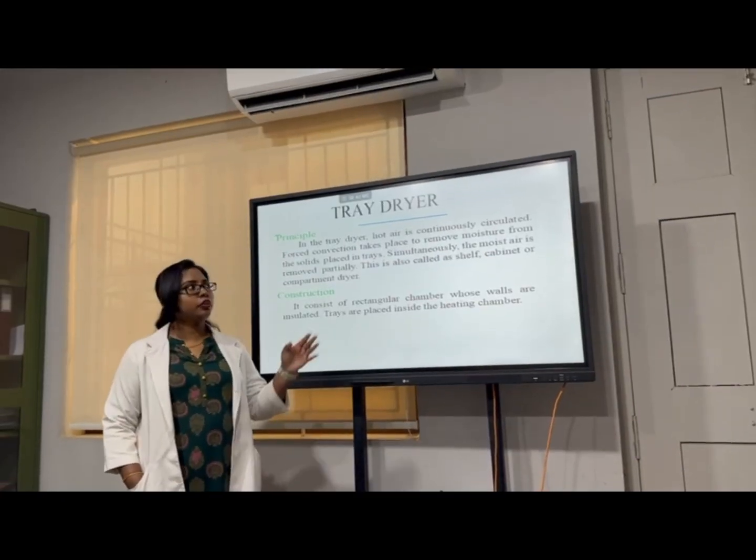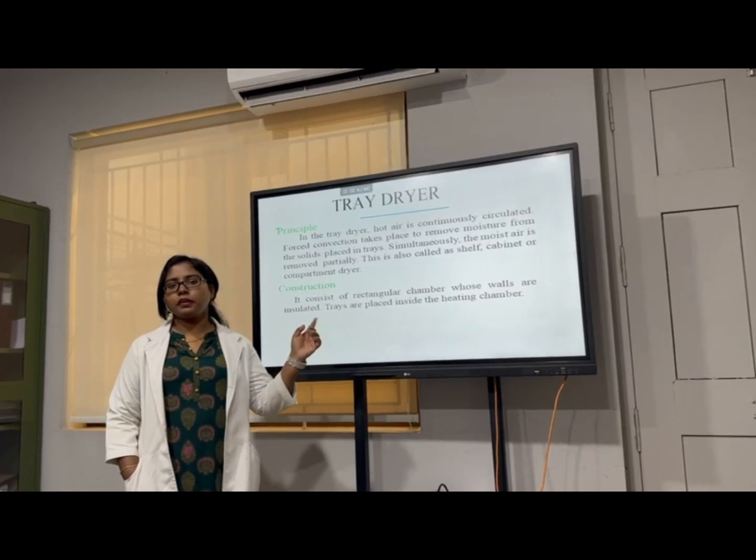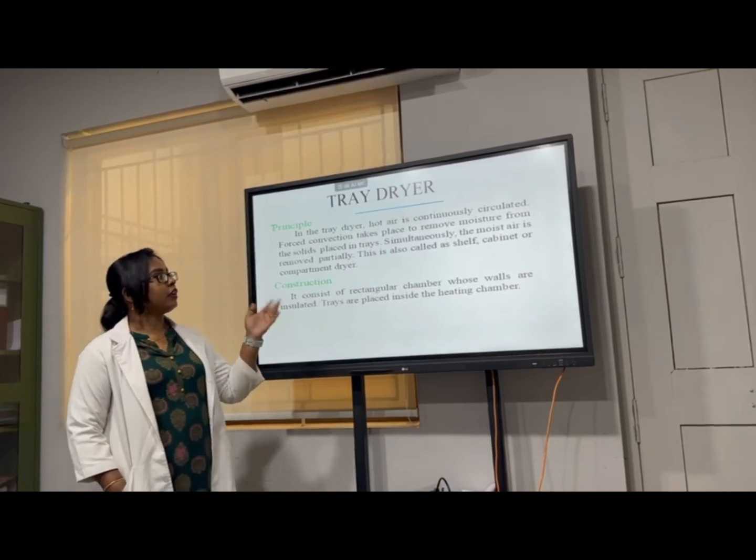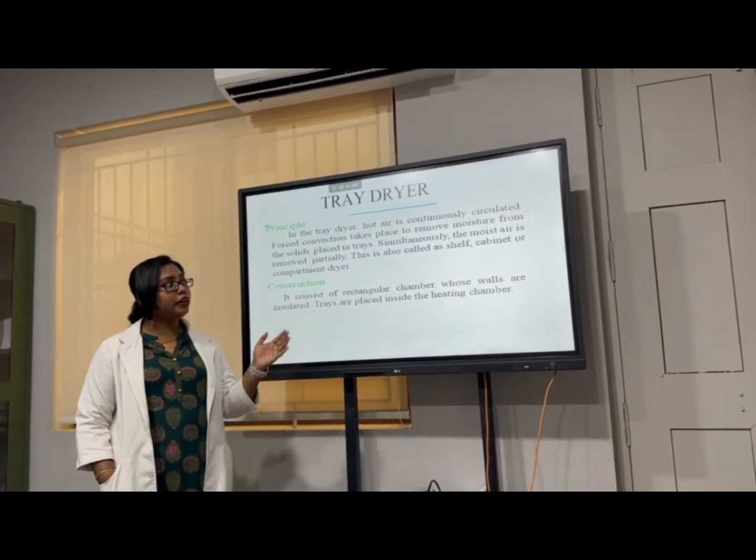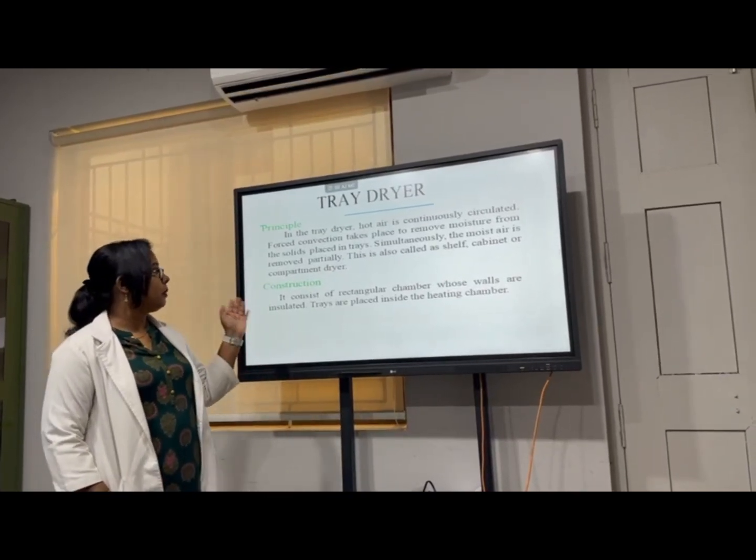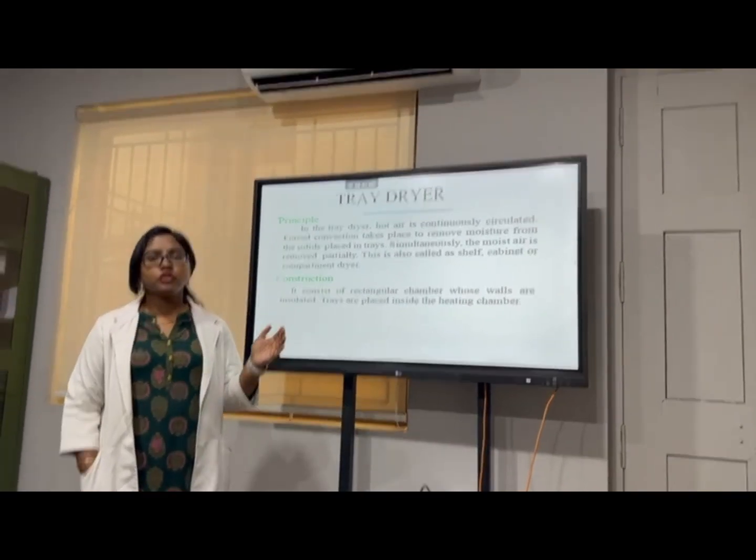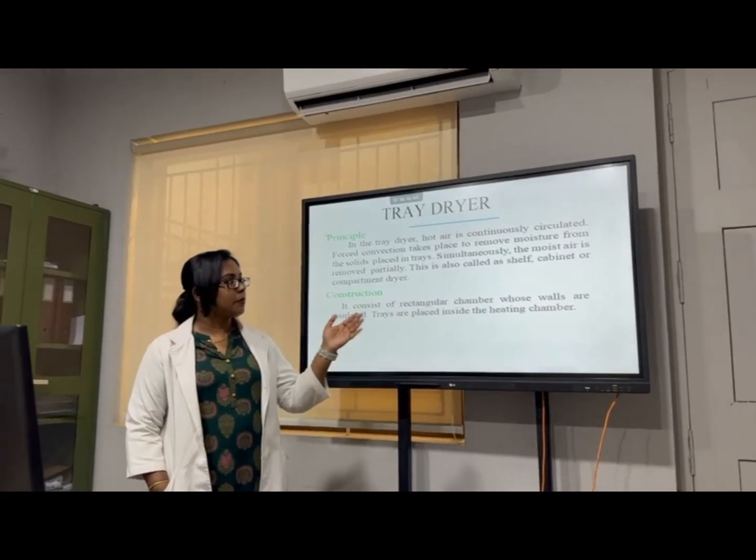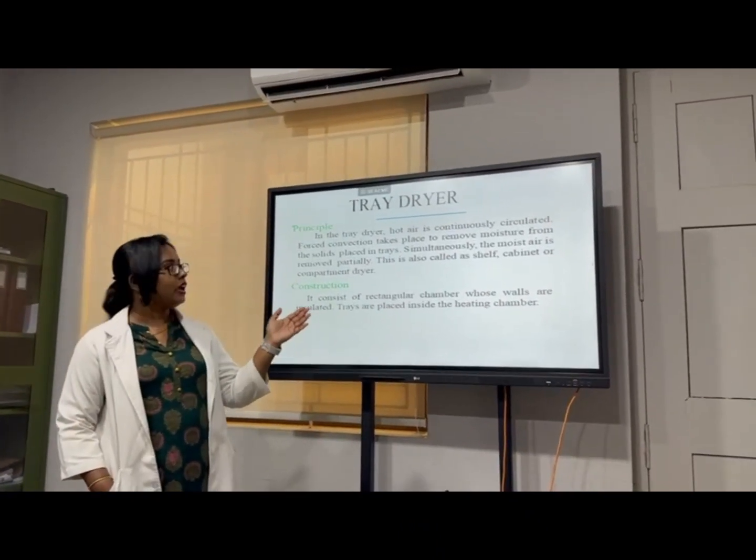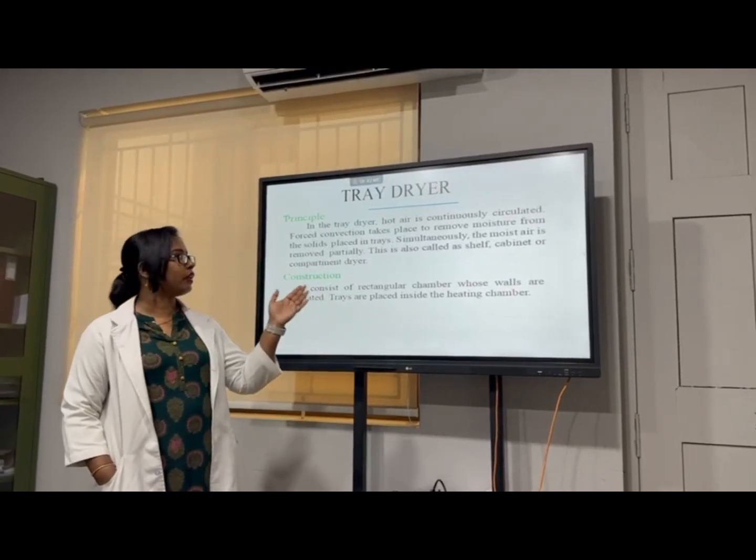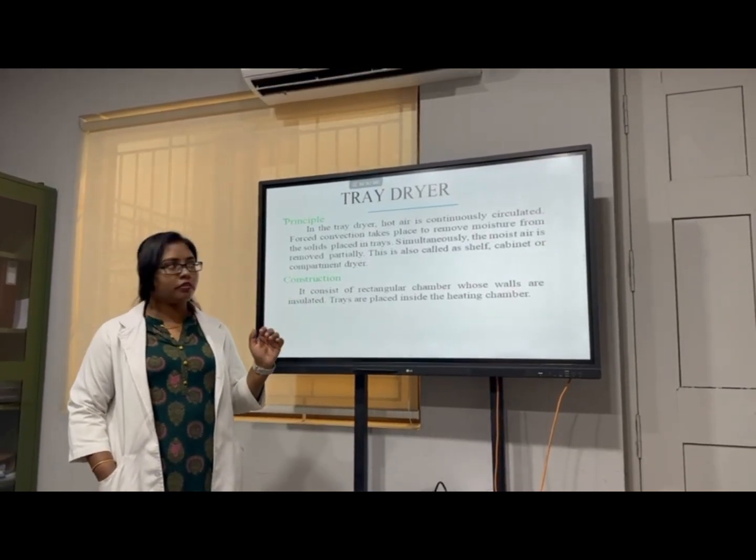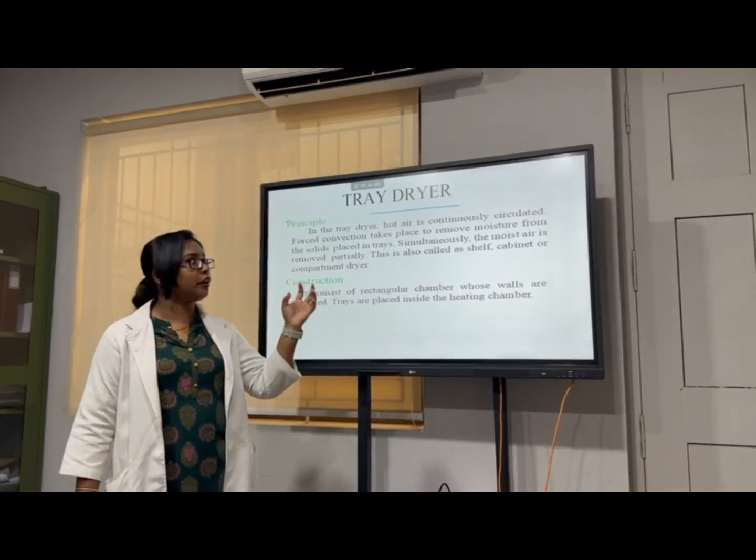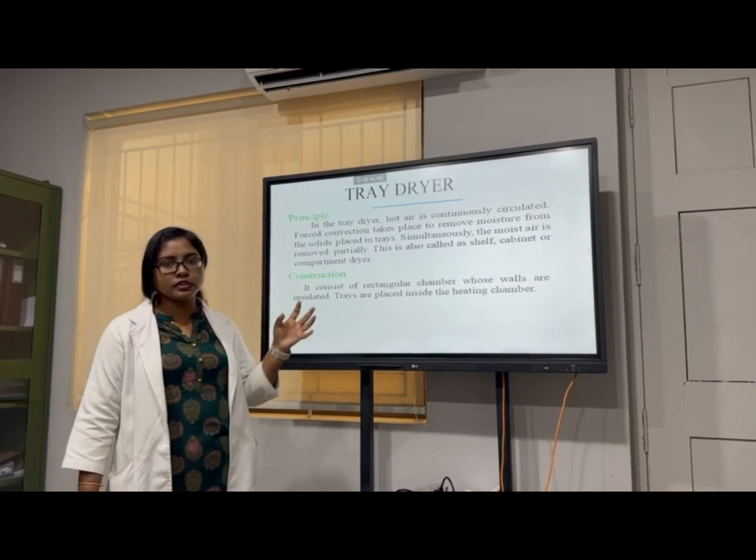Then we go for the equipments. First equipment is tray dryer. The mechanism involved in tray dryer is hot air is continuously circulated by forced convection to remove the moisture from the solids based on the trays. Simultaneously, the moisture air is removed partially and this is called a shelf or cabinet or compartment dryer. Here, in the principle, the hot air is continuously circulated by forced convection.